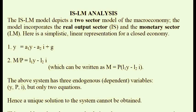The IS-LM model is a two-sector model of the macroeconomy. It is macroeconomics' attempt to create a general equilibrium model. In this simple model there are two sectors represented by two equations. The first equation represents the real output sector, often called the IS equation, and the second equation represents the monetary sector or financial sector.